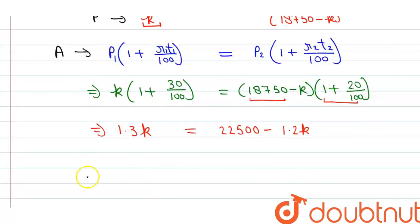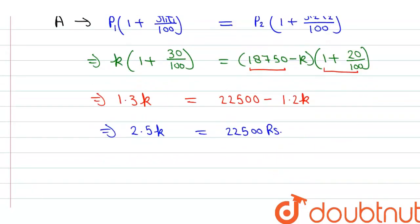Now we'll bring the k terms to one side. 1.3 plus 1.2 equals 2.5 times k equals 22,500 rupees. Now we'll divide both sides by 2.5. So finally we'll get the value of k which we needed to find: Rs. 9,000.